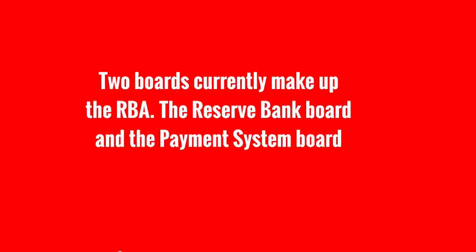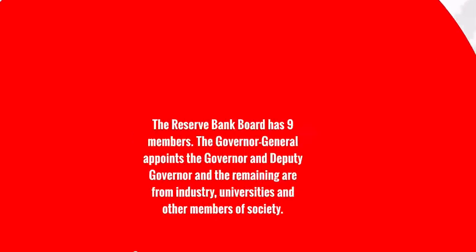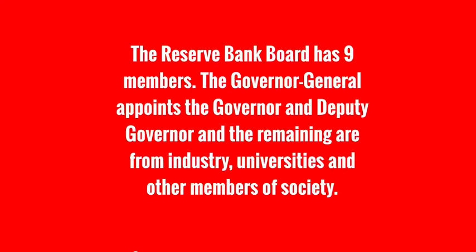The two boards that currently make up the RBA are the Reserve Bank Board and the Payment System Board. The Reserve Bank Board holds nine members. The Governor-General appoints the Governor and the Deputy Governor. The remaining members are selected from industry, universities, and other members of society.